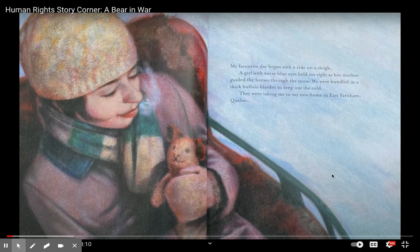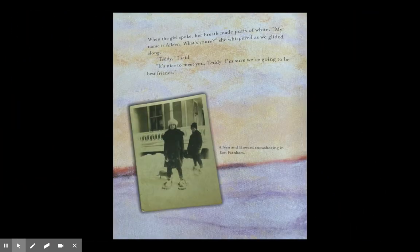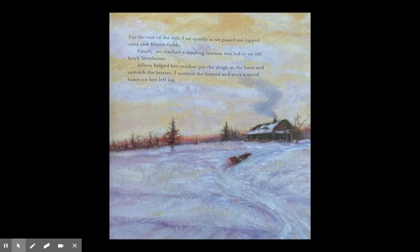My favorite day began with a ride on a sleigh. A girl with warm blue eyes held me tight as her mother guided the horses through the snow. We were bundled in a thick buffalo blanket to keep out the cold. They were taking me to my new home in East Farnham, Quebec. When the girl spoke, her breath made puffs of white. 'My name is Aileen — what's yours?' she whispered. 'Teddy,' I said. 'It's nice to meet you, Teddy. I'm sure we're going to be best friends.' For the rest of the ride I sat quietly as we passed ice-tipped trees and frozen fields. Finally we reached a winding laneway that led to an old brick farmhouse. Aileen helped her mother put the sleigh in the barn and unhitch the horses. I noticed she limped and wore a metal brace on her left leg.